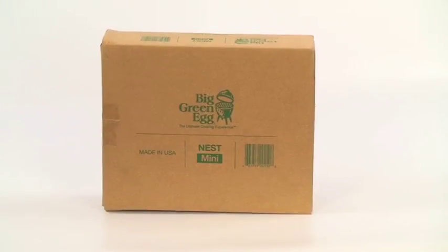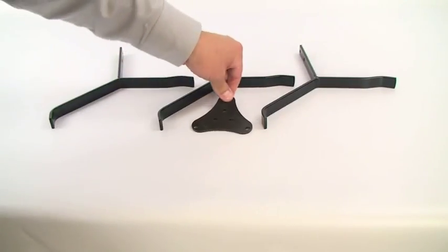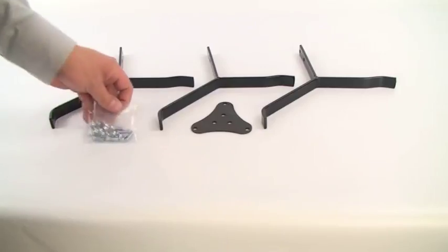If you purchase the additional mini nest, it will be packaged in a separate box which contains three risers, a hub plate, and a packet of hardware.